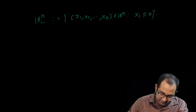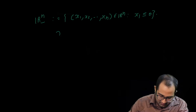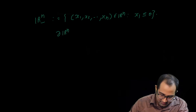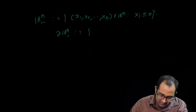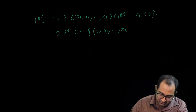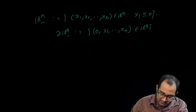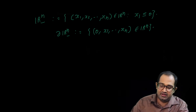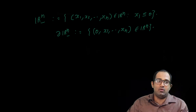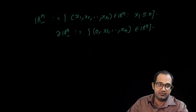This set has an obvious boundary in the topological sense. This boundary is nothing but the set (0, x2, ..., xn) in Rn — that is, the first coordinate is 0. That is the boundary of this set.